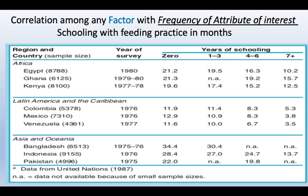Sometimes we can add additional factors to this data. In continuation to the previous table, if we are interested to know whether schooling has any correlation with breastfeeding practices — a correlation among any factor with the frequency of the attribute of interest — the attribute here is breastfeeding, and the factor is years of schooling. We want to know whether increase in school years has any association with breastfeeding practices.